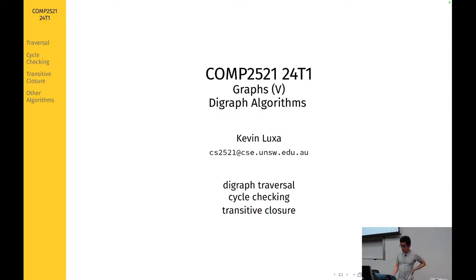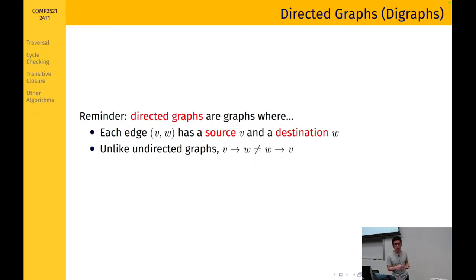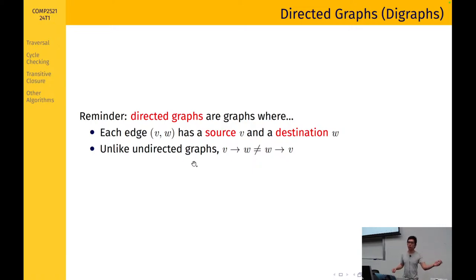Let's start by looking at digraph algorithms. A directed graph is a graph where each edge has a direction — each edge has a source V and a destination W. In a directed graph, sometimes you can have self-loops, where an edge goes from a vertex to itself. The main point is that unlike undirected graphs, even though you might have an edge from V to W, that doesn't mean you have an edge from W to V.